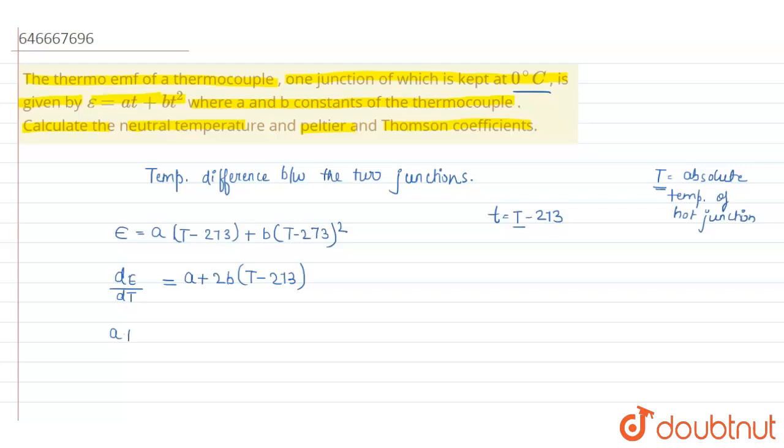a plus 2b into t minus 273 is equal to zero. That will be tn, that is neutral temperature, that will be in degree celsius is equal to minus a upon 2b degree celsius.